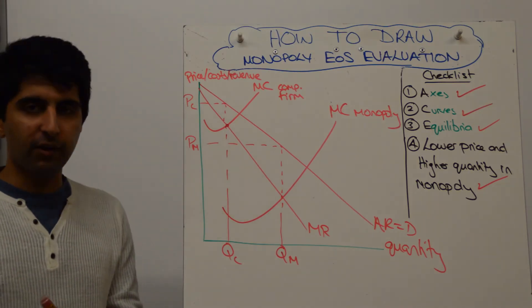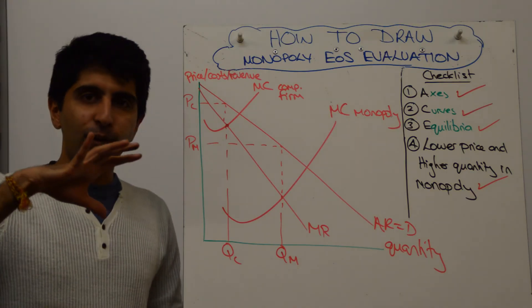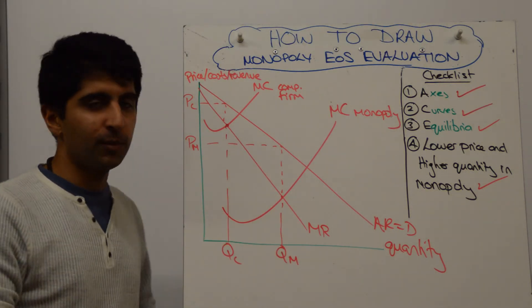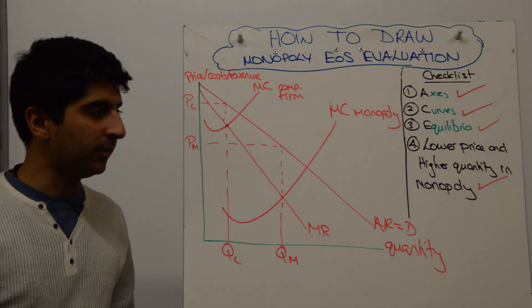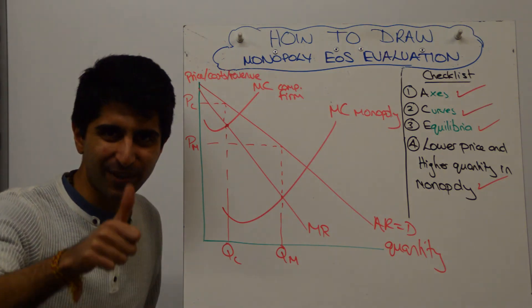So what a strong diagram in evaluation. The economies of scale benefit means that for the dynamic efficiency benefit, you have a diagram, and for the economies of scale benefit, you have a diagram as well. Great to use. Use it, learn it, practice it, and I'll see you in the next video. Thanks so much.